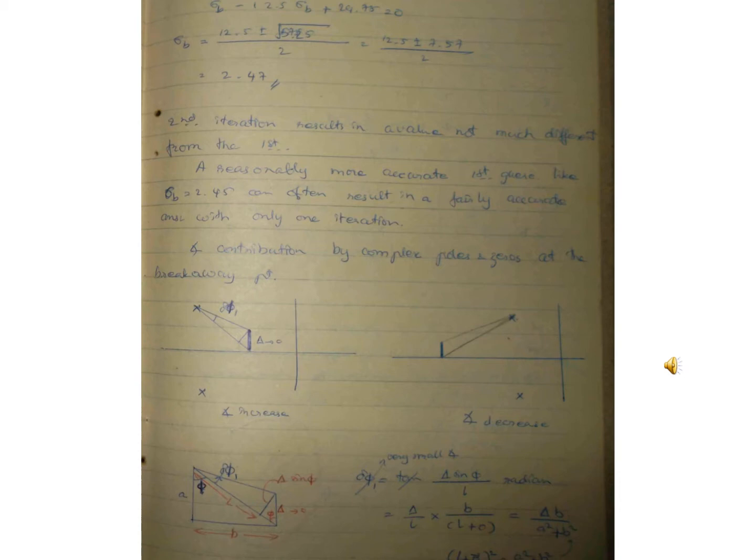Now 2 by 5 plus or minus square root of 67 by 5 divided by 2. So 2.97.